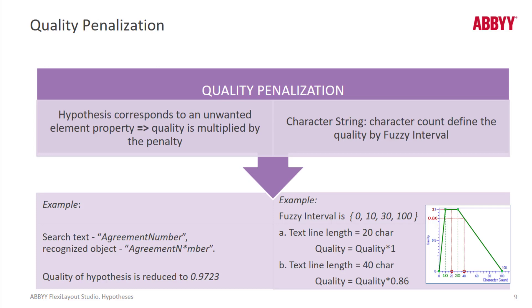Speaking of penalizing quality of already found elements, if a string with a missing or incorrect character is found, it will have a lower hypothesis quality. So, we see that right here. We're searching for agreement number, but we've got maybe a typo in our document. And so, instead of having a perfect quality, the quality is reduced to here 0.9723.